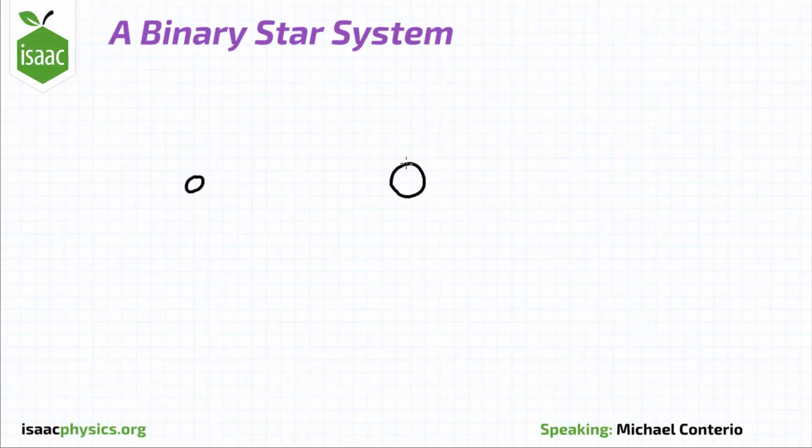In this question, the two stars have mass m and 2m and are separated by a distance d, which is large. So we can basically ignore the radii of the two stars.